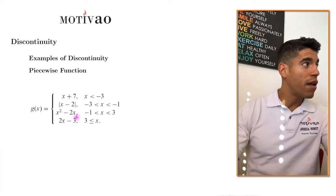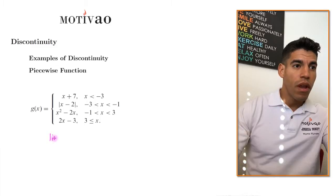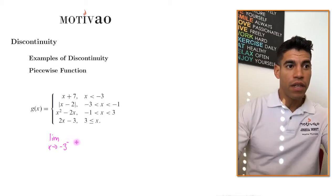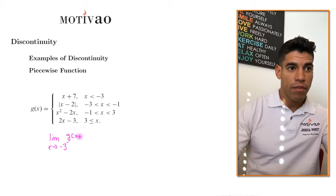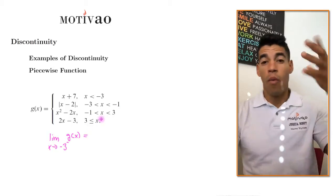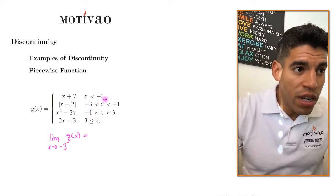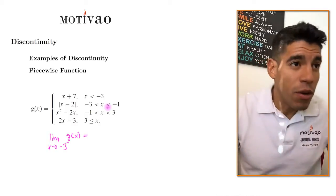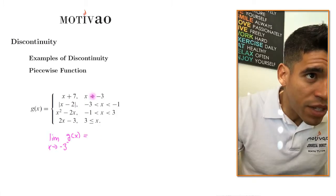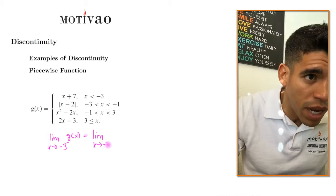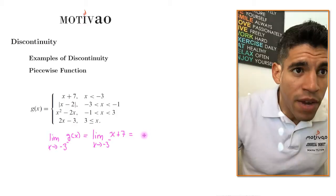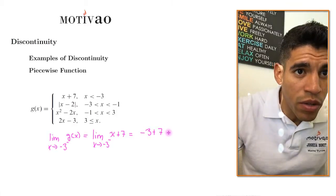The limit as x approaches negative 3 from the left of g of x equals what? If I'm approaching negative 3 from the left, x has to be less than negative 3. So we're going to choose x plus 7. The limit when x approaches negative 3 from the left of x plus 7 gives us negative 3 plus 7, which is equal to 4.